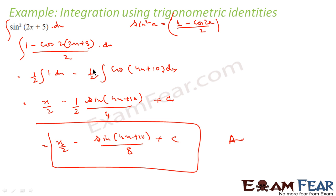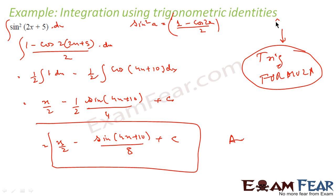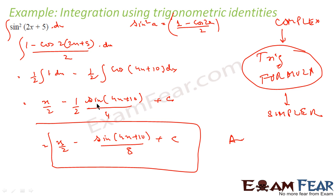And this is the integral of sin square (2x plus 5). What we have done here is we used the trigonometric formula to convert this difficult integral into a simpler integral. Once I have the simpler integral, I can directly integrate and get the answer.